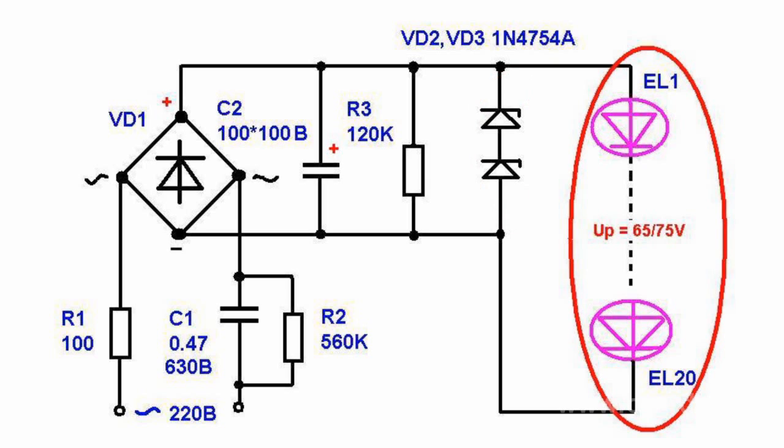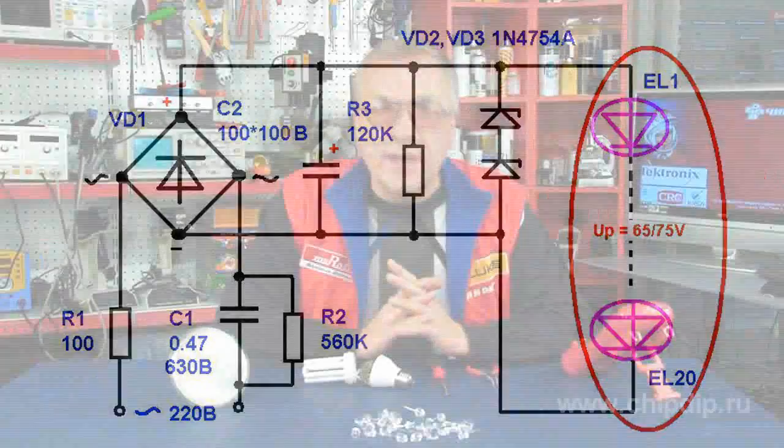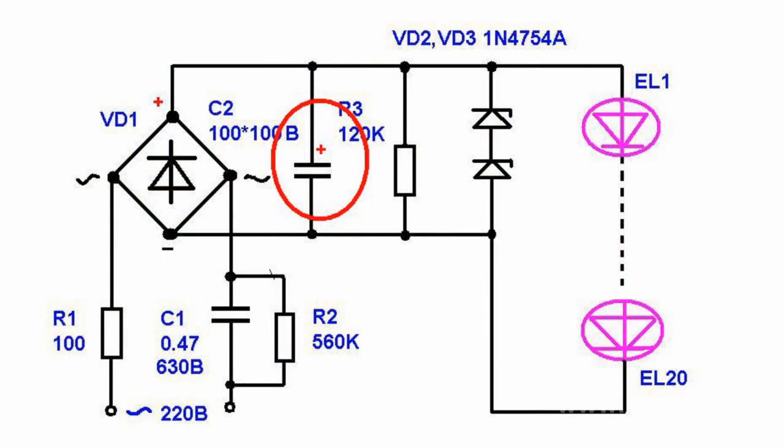Since the circuit includes 20 LEDs, the voltage drop is approximately 65 to 75 volts, and the voltage applied to capacitor C2 will be restricted at the same level. Two zener diodes, model 1N4754A, have a stabilized voltage of 78 volts. In the event of a fault involving any LED, these zener diodes will open and the voltage across the capacitor will be stabilized to 78 volts. This is lower than the capacitor's rated supply voltage, so no power supply fault will occur.